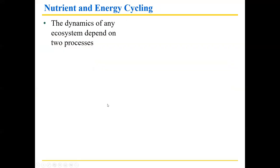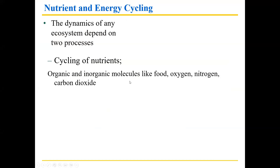The first thing I want to talk about is nutrient and energy cycling. When we talk about ecosystems — which is where living things live, including us — the dynamics depend on two processes. The first is called the cycling of nutrients: molecules, atoms, etc., cycle between the different components. They stay here but go from place to place. Organic and inorganic molecules like food, oxygen, nitrogen, and carbon dioxide go between different components. They don't arrive on Earth or leave Earth — they cycle.